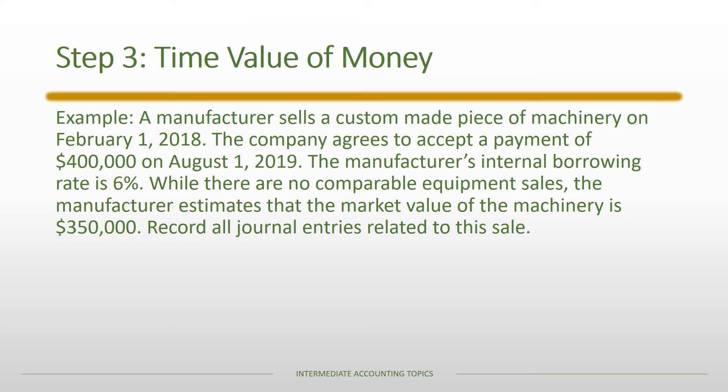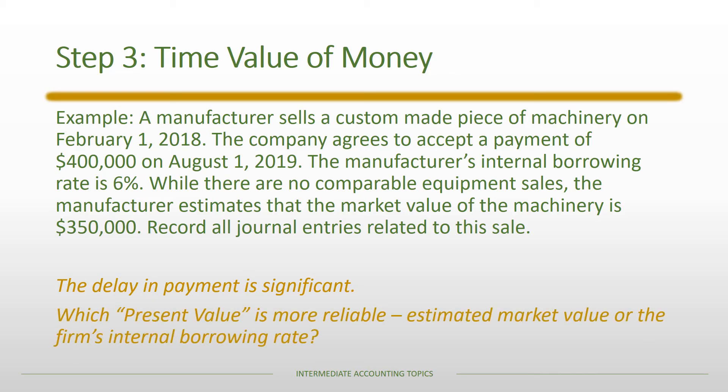Let's use an example. A manufacturer sells a custom-made piece of machinery on February 1st, 2018. The company agrees to accept payment of $400,000 on August 1st, 2019. The manufacturer's internal borrowing rate is 6%. While there's no comparable sales equipment, the manufacturer estimates the market value of the machinery is $350,000. Since the delay is more than a year, it is significant. We then need to figure out which approach to getting a present value is more reliable: the estimated market value of $350,000 or the 6% internal borrowing rate.